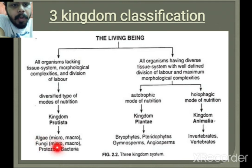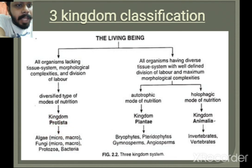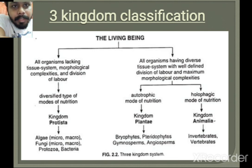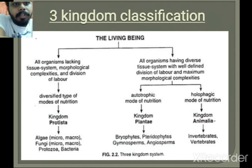Depending on these criteria, algae, fungi, protozoa, and bacteria are placed into the Protista kingdom. Bryophyta, pteridophyta, gymnosperms, and angiosperms are placed into the Plantae group, and invertebrates and vertebrates are placed in Animalia. In this way, all living organisms are divided into three kingdoms: Protista, Plantae, and Animalia.